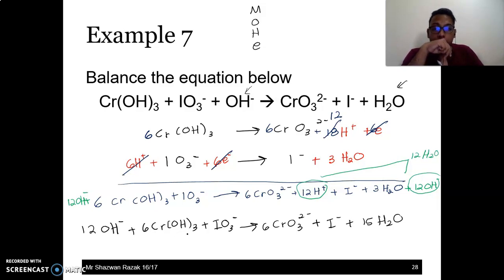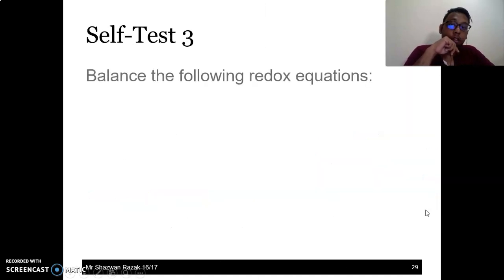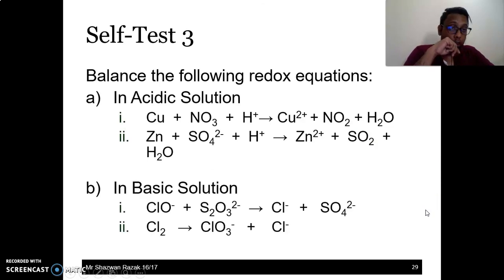Then you just check. 12 OH plus 3 plus 18 is 33. So 6 times 3 is 18, plus 15 is also 33. H there are 12, 18, 30. So 15 times 2 is 30. And then I there is 1, 1. So 6 Cr. That's very good. The charge is also balanced. So this is how you balance by ion-electron method. Try to do several examples. Self test 3, I want you to do all of these. That's all for today. Thank you.